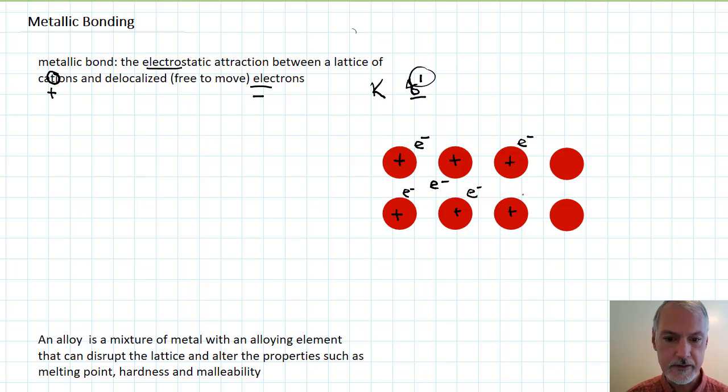This then results in a sea of cations, because that's what those would now be described as, and a group of freely-moving electrons. So these have the ability to move in a particular direction, and hence, metals are good conductors of electricity.